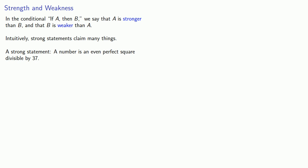This claims three distinct things. First, a number is even. Second, a number is square. And third, a number is divisible by 37.